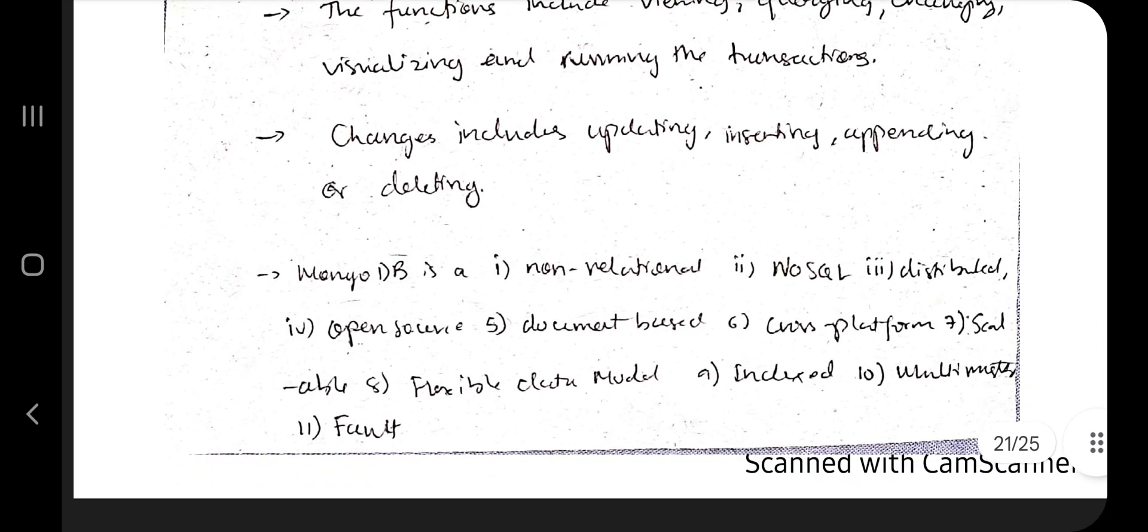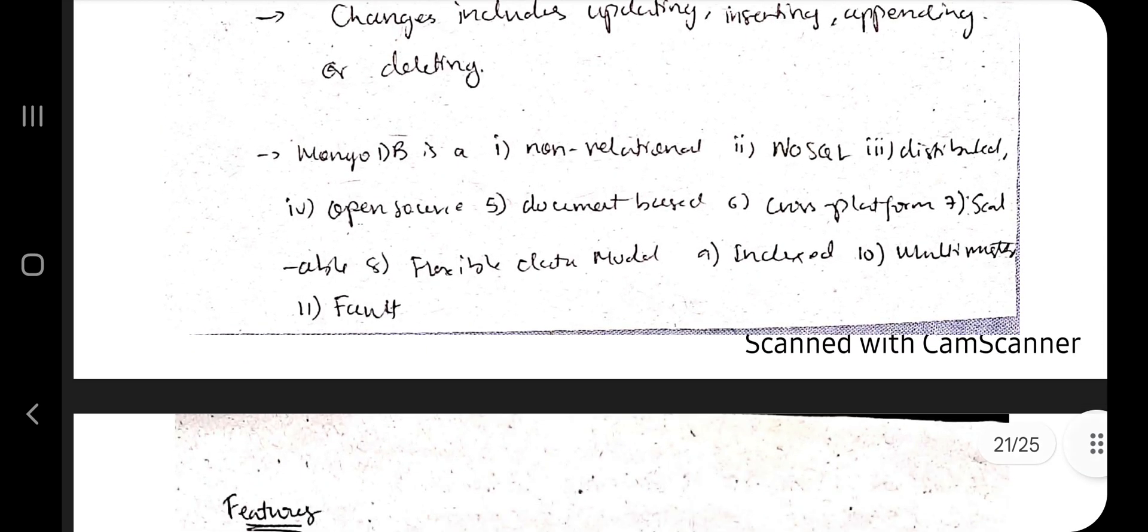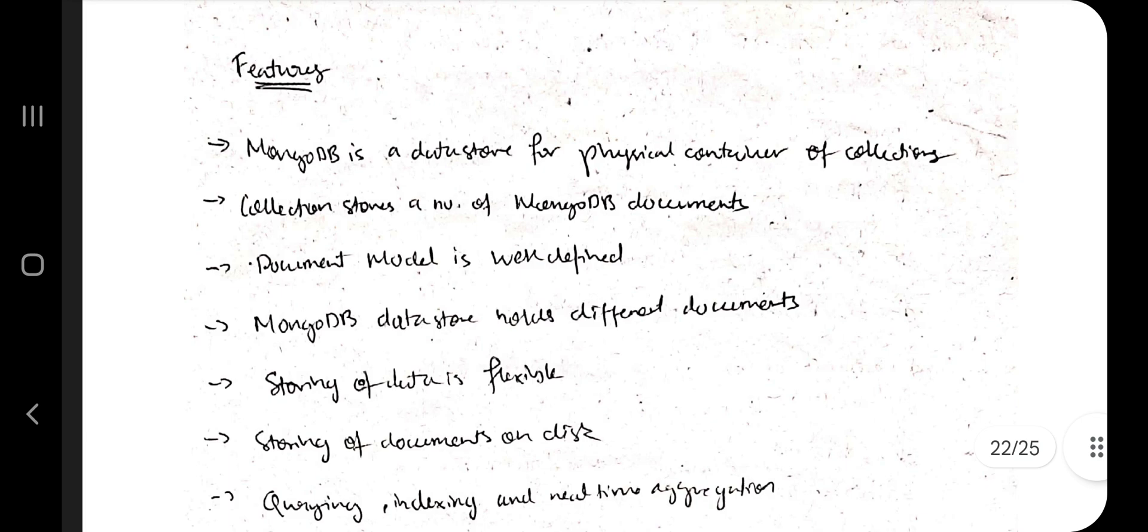What are the features? Before features there are some characteristics. So MongoDB is non-relational, NoSQL, distributed - all the same things, the good things about databases are written here. You can write in your own words.